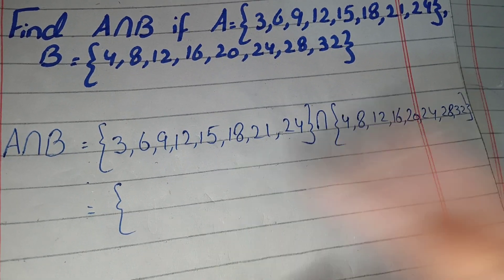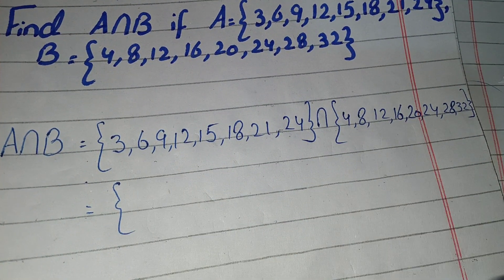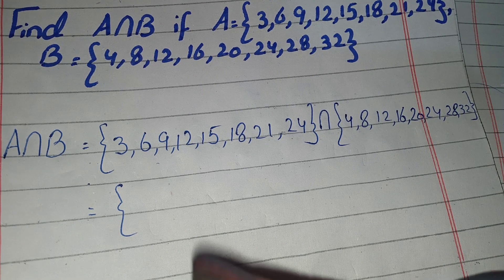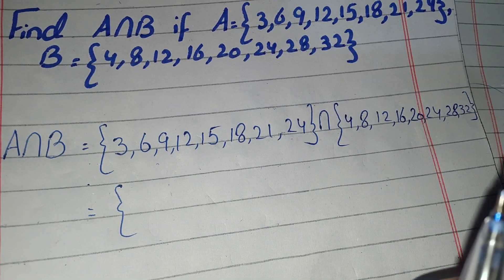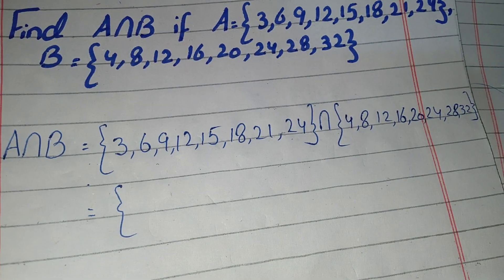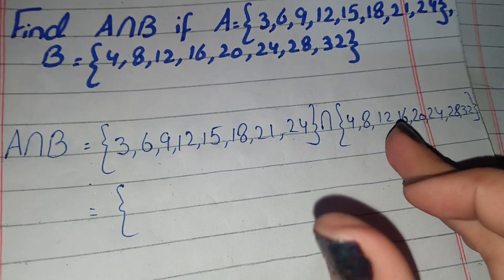5 is not, 6 is not, 7 is not, 8 is not, 9 is not, 10 is not, 11 is not. But 12 here, 12 is also in both sets.